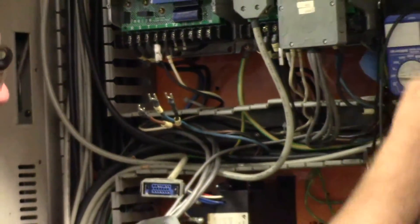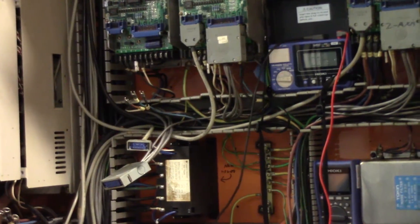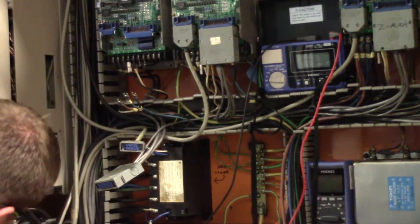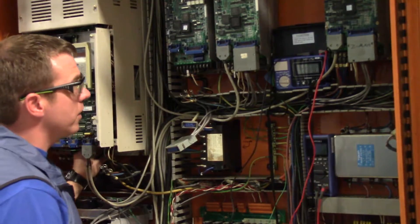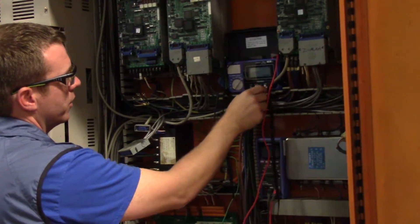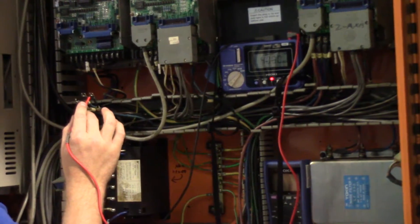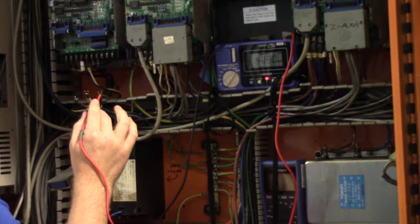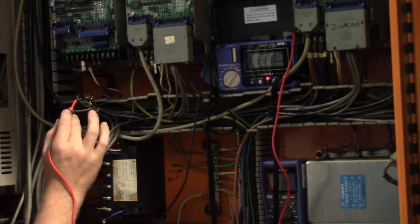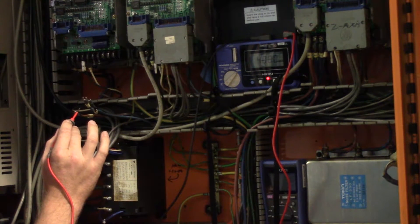Now we're going to move on to our insulation tester, our digital mega ohm meter or megger. This is our Hioki IR 4056 and you have to find a suitable ground. I used the cabinet ground underneath the spindle drive. So we'll turn it to a thousand volts. Remember we always use a thousand volts when we're checking for insulation. Let's check W. We're at four thousand. Check V. We're at four thousand and we'll check U.